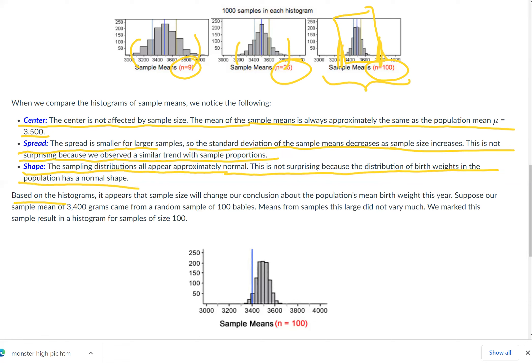Based on those histograms, it appears that sample size will change our conclusion about the population mean birth weight this year. Suppose our sample mean of 3,400 grams came from a random sample of 100 babies. Means from samples this large did not vary much. We mark the sample result in a histogram for samples of size 100 here. So imagine 3,400 was our mean on that one try, but this histogram represents 1,000 tries.